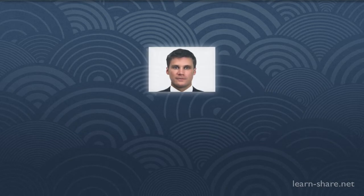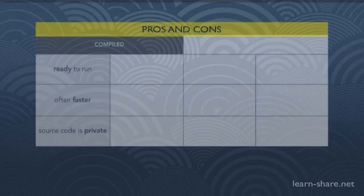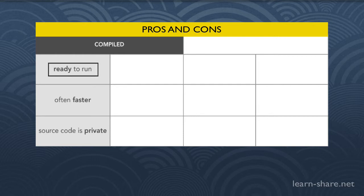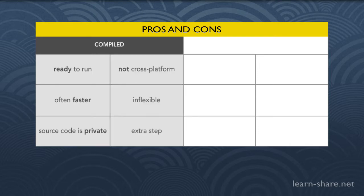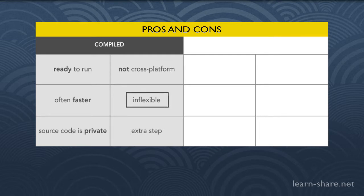Now let's see the pros and cons of each. The compiled language is ready to be executed and ready to run. It can be optimized for the CPU so it can be faster, and you don't have to send your source code — it's private. On the downside, it's not cross-platform. If you compile on a PC, it won't run on a Mac. It's inflexible, needs to be compiled even for different processors on the same platform, and you have to make an extra step because you have to compile every time you want to test your program.